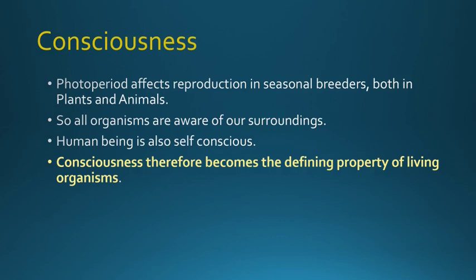Photoperiod — the amount of exposure to sunlight — affects reproduction especially in seasonal breeders like dogs, and in both plants and animals. That is why long-day plants and short-day plants are present. All organisms are aware of their surroundings, and human beings are also self-conscious. Therefore, consciousness is also a defining property of living organisms. So students, metabolism and consciousness are both defining properties of living organisms.